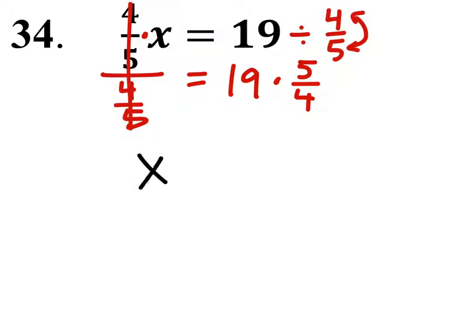So that gives us x equals 19 times 5/4. Alright, so we get 95/4.